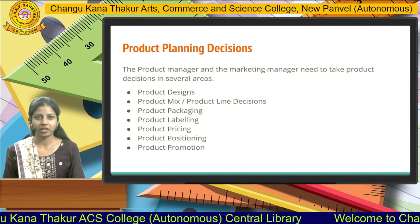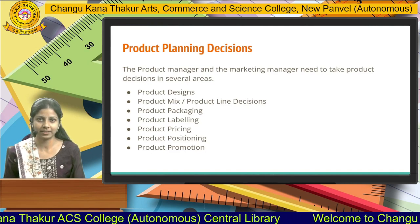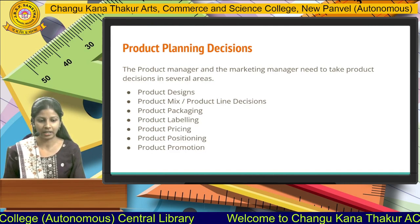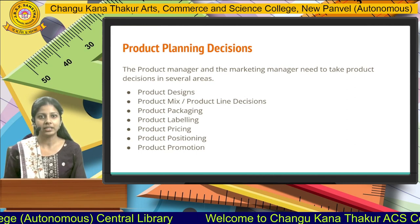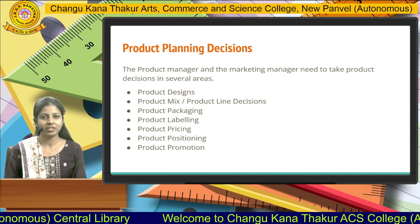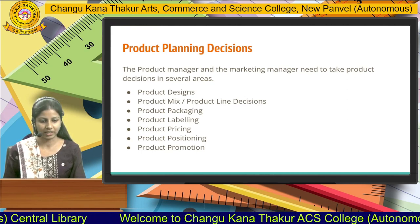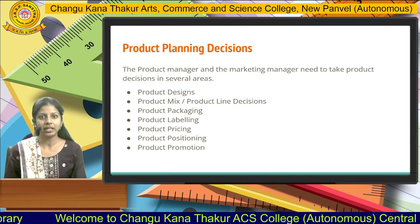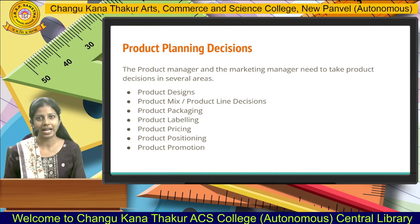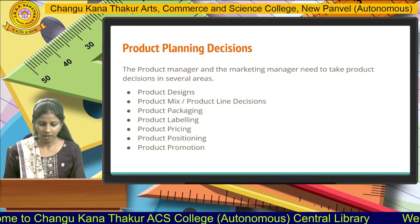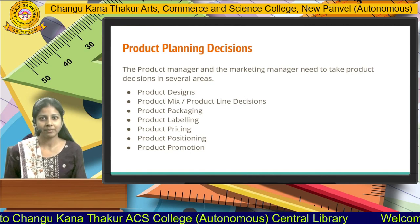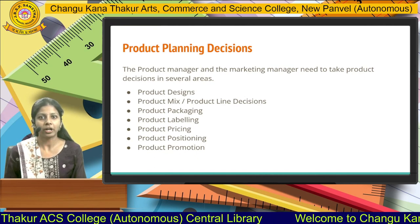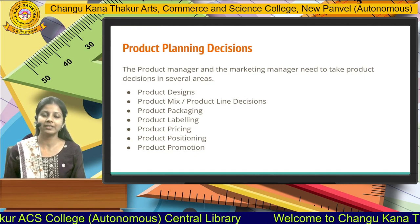So what is product planning decision? Whenever a company starts to develop a product, the company undertakes various parameters to introduce the product. The various parameters related to the introduction of the product are known as product planning decision. The product manager and the marketing manager need to take product decisions in several areas.